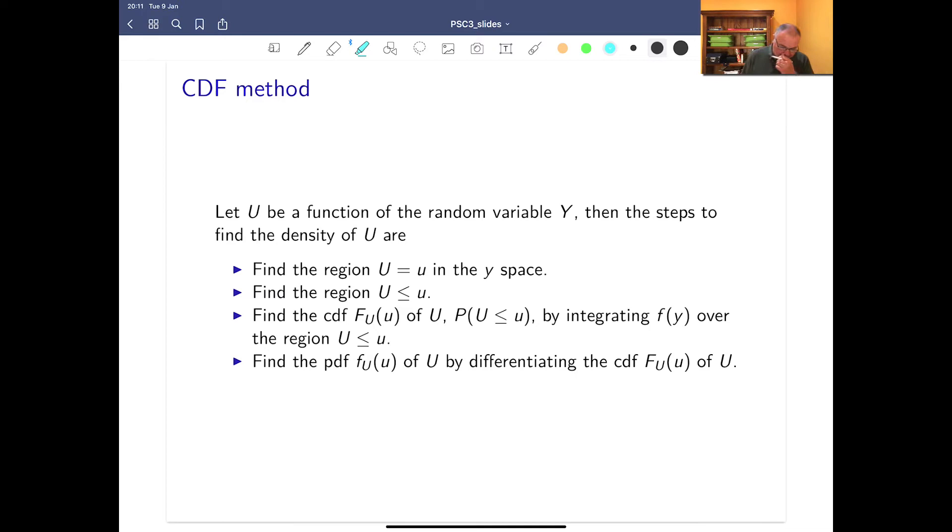So let's start with the CDF method. The process is going to be, first of all, we're going to draw a figure, have a look at the figure, work out the integration we need to do of our original random variable to get the CDF we need for the new random variable. And then we are going to differentiate that to get our PDF.